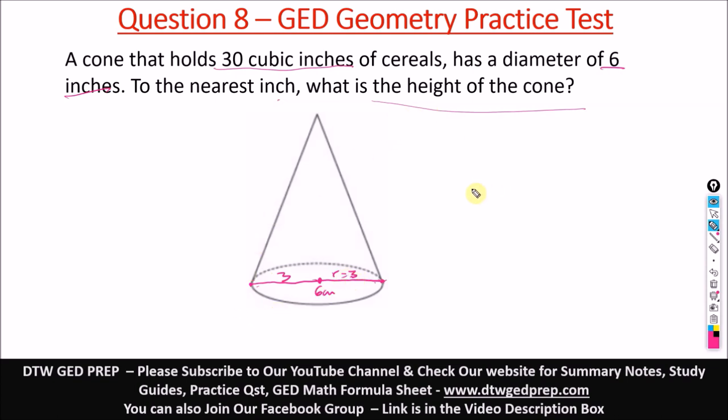What's the formula for the volume of a cone? The volume of a cone is 1 over 3 pi r squared h. We know that the volume is 30, V is 30, equal to 1 over 3. Our pi is times 3.14. Pi is 3.14 on our formula sheet.